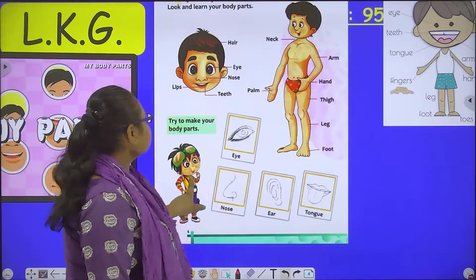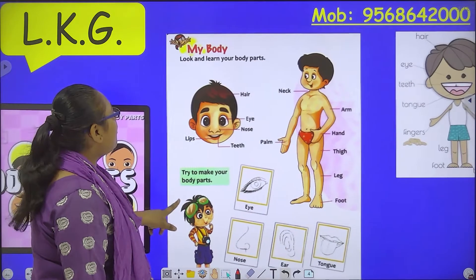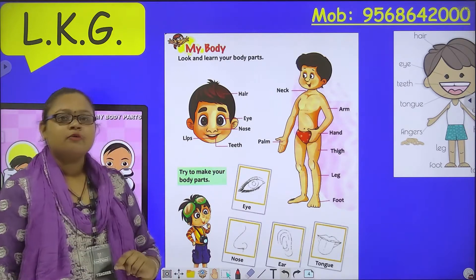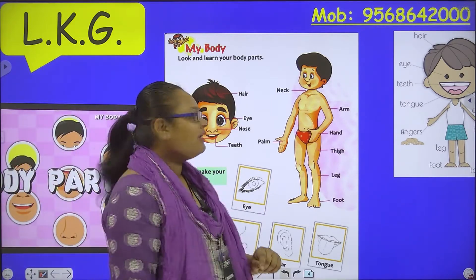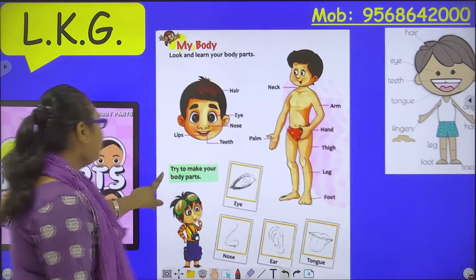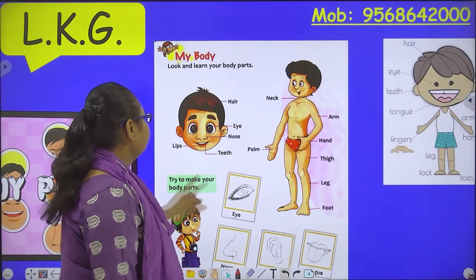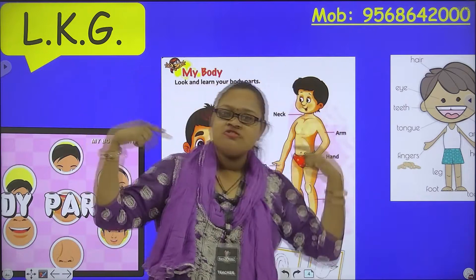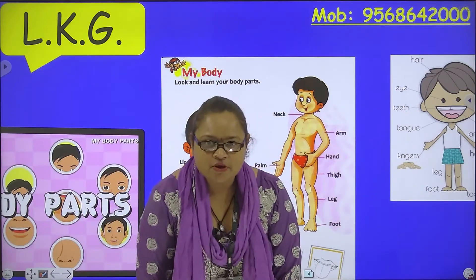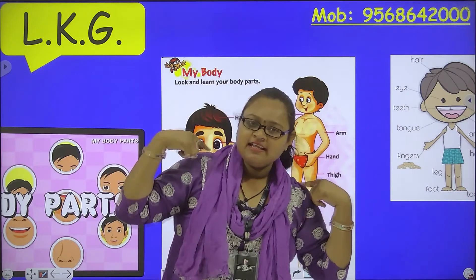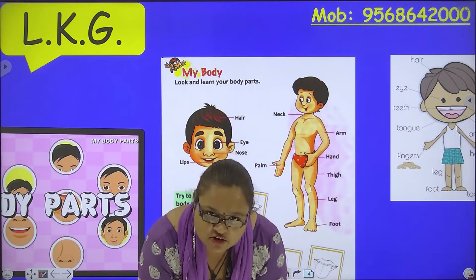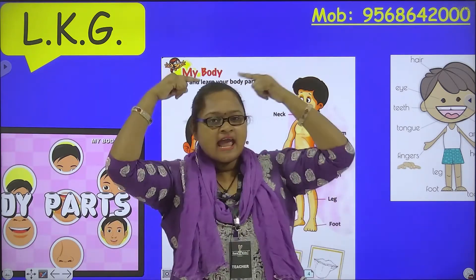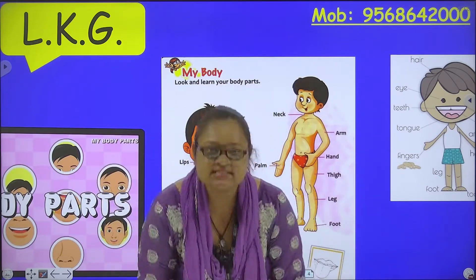Now let's look at this. Open page number 4. Look and learn your body parts. Now you have to do actions with the teacher. This is hair. Head, shoulder, knees and toes, knees and toes. Head, shoulder, knees and toes, knees and toes. And eyes and ears and mouth and nose. Head, shoulder, knees and toes, knees and toes.